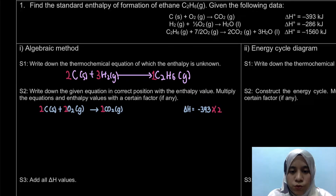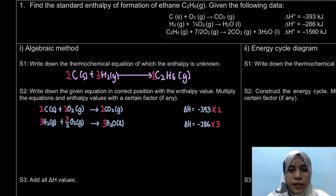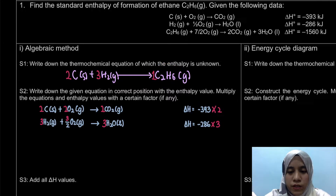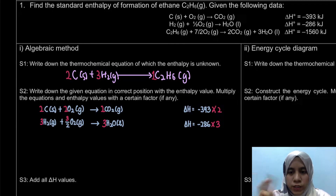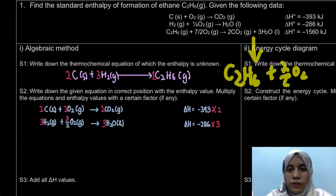For H2 gas, which is on the reactant side in our unknown equation, we look at the given equation where H2 is also on the reactant side. Since we need 3 moles here, we multiply that equation by 3. For C2H6: it should be on the product side in our unknown, but in the given equation it's on the reactant side. So we have to flip the equation — writing 2CO2 + 3H2O → C2H6 + 7/2 O2 — and change the sign from negative to positive.